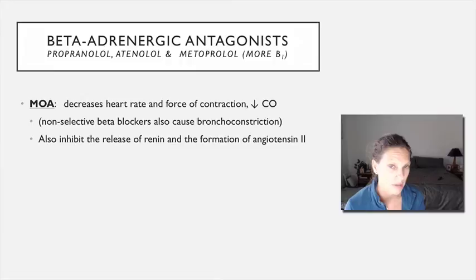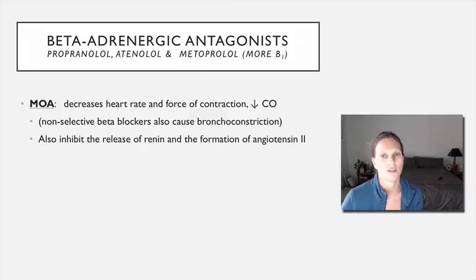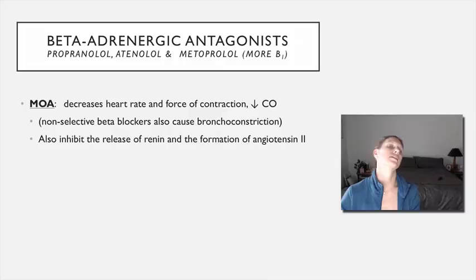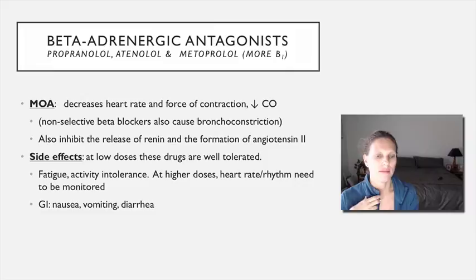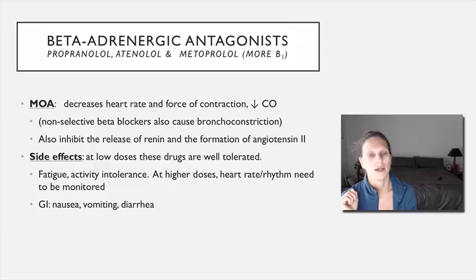The sympathetic nervous system — specifically norepinephrine hitting beta receptors in the kidneys — is responsible for releasing renin and activating the renin-angiotensin-aldosterone system. Angiotensin is a major vasoconstrictor, so by blocking beta receptors in the heart and inhibiting renin release, you also see less vasoconstriction. These drugs are pretty well tolerated at lower doses. They're effective in catecholamine-driven hypertension and particularly in younger patients, who seem to respond well to beta blockers.